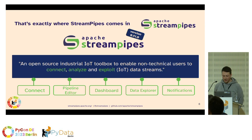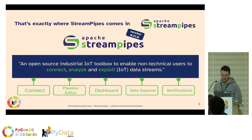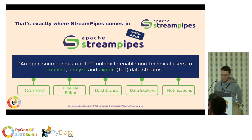Apache StreamPipes is an open source industrial IoT toolbox that enables non-technical users to connect, analyze, and exploit IoT data streams. We're also focusing on people who don't want to get involved in IoT protocol complexities and all their pitfalls. StreamPipes is a project of the Apache Foundation, and we have graduated to a top-level project some months ago. We recently launched version 0.91.0, which mainly includes our Python support. StreamPipes at the core follows an event-driven approach, so every data point inside StreamPipes is represented as an event and shared and processed accordingly.